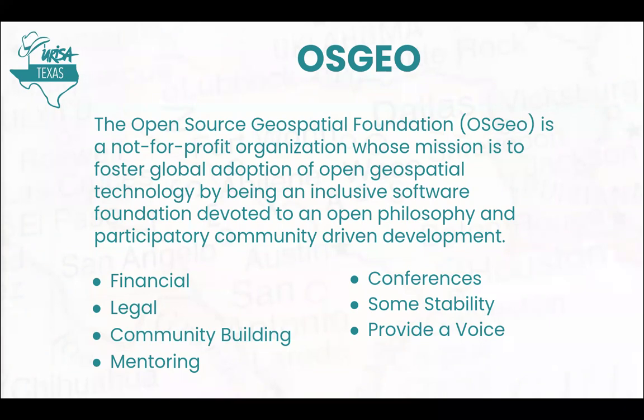Most of this runs off email lists, which is probably old school, but it's the lowest common denominator. You can join an email list, some have Slack channels, some have a Gitter which is part of the GitHub ecosystem, and there's a wiki where you can discuss things. OSGEO provides conferences and some financial stability. The last OSGEO conference was in Florence, Italy — that happened about a month ago.